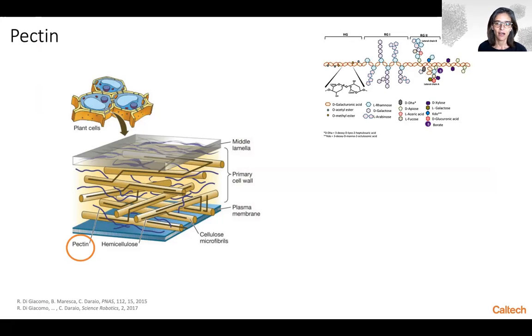Pectin is effectively a sugar that's present ubiquitously in the plant cell wall structure of all plants. It's mostly found in different types of fruits and has a very complex structure that I'm showing on this slide.